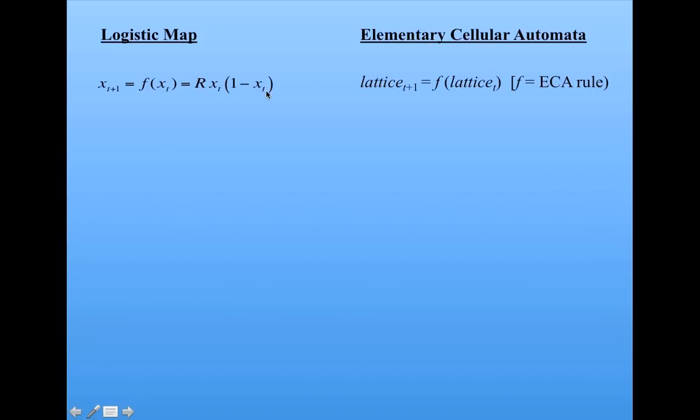Here's our familiar equation. Similarly, elementary CAs and other kinds of cellular automata, we have our state of the world, which is our lattice configuration of black and white cells. The lattice configuration at time t plus 1 is a function of the lattice configuration at the previous time step. This function is represented by the rule that's taking neighborhoods and updating the center cell.